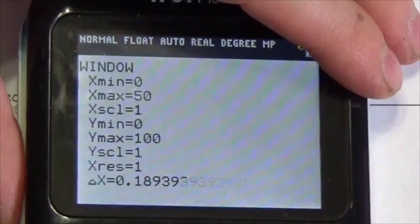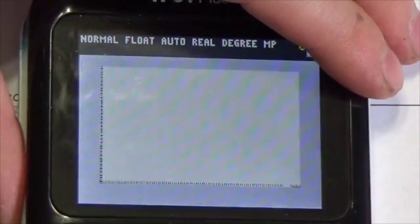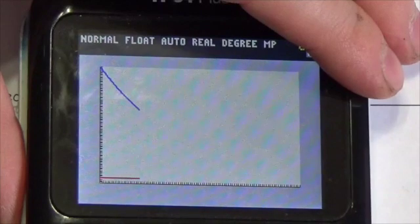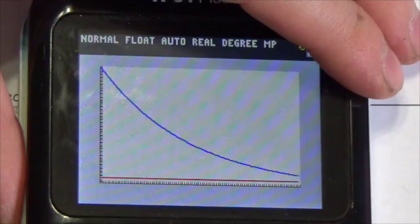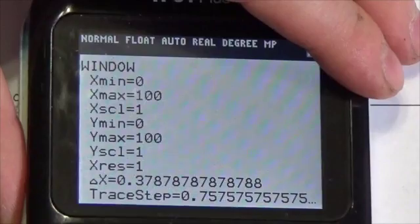Okay, let's get greedy here. Let's make this 100. That's got to do it, right? It doesn't. Crazy. Okay, so let's go to our window. Let's make that 150.